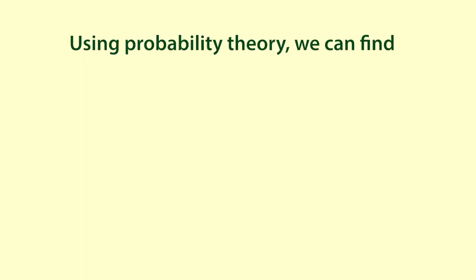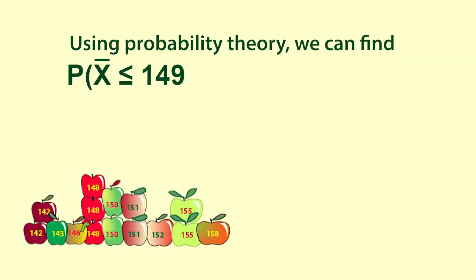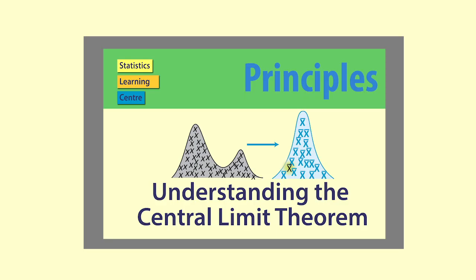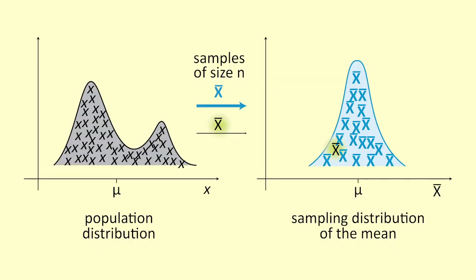We can use probability theory to work out how likely it is to get a mean of 149 grams or less if the mean weight of the apples in the population is 152 grams. This builds on the central limit theorem, so you might like to watch that video now if you're not familiar with it. The central limit theorem talks about the nature of the sampling distribution of the mean.